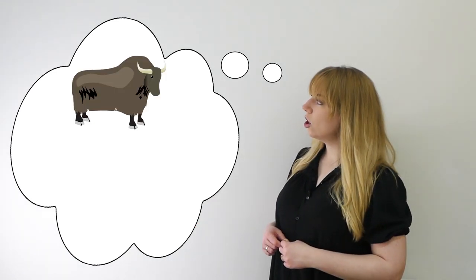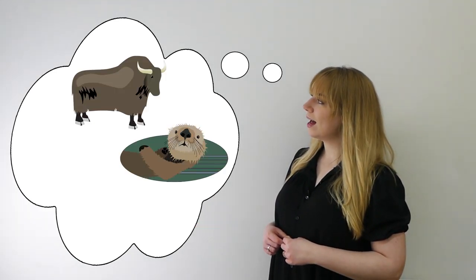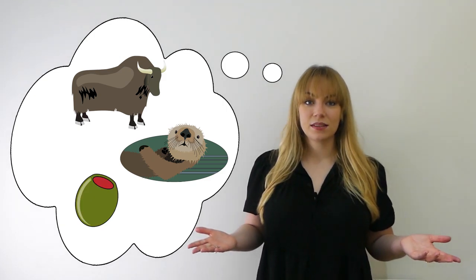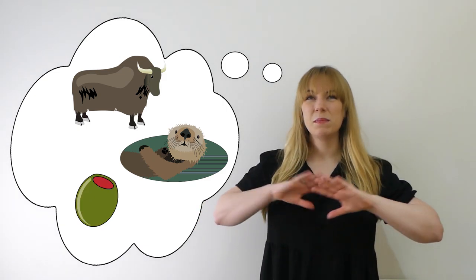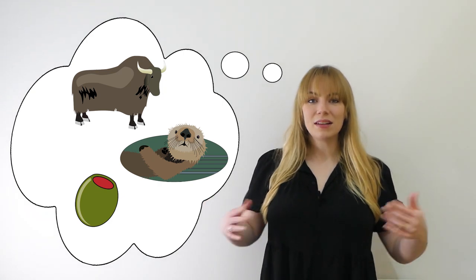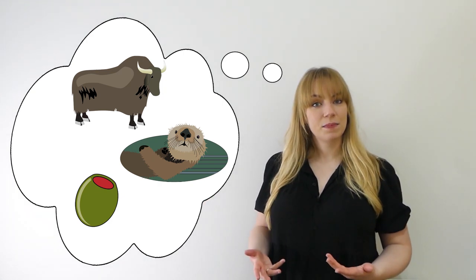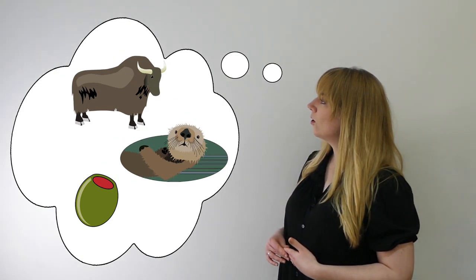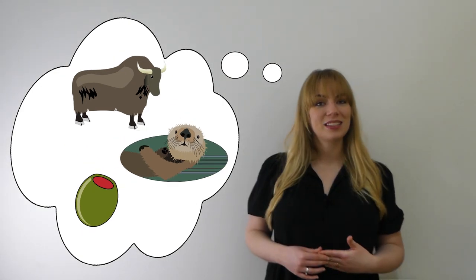I thought of ox, otter, and olive. Did you think of any of those words? Maybe you thought of completely different words. Well done. Let's practice saying those words together. Ready? Ox, otter, olive. Well done.